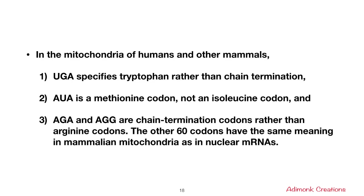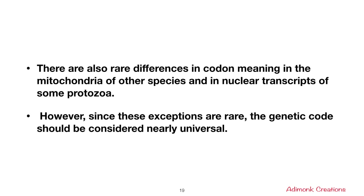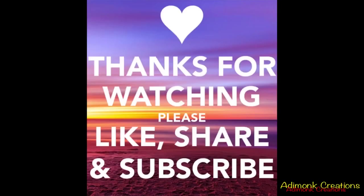Apart from these exceptions, the properties of the genetic code and the meaning of codons are common to all other organisms. Therefore, in general, we can say the genetic code is universal. There are also rare differences in codon meaning in the mitochondria of other species and in nuclear transcripts of some protozoa, but since these exceptions are rare, the code should be considered nearly universal. Thank you for listening — please like, share, and subscribe to the channel for upcoming classes.